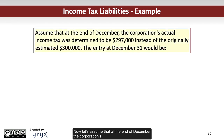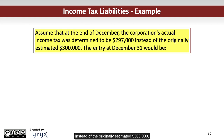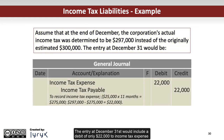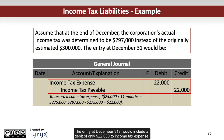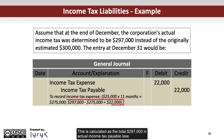Now let's assume that at the end of December, the corporation's actual income tax was determined to be $297,000, instead of the originally estimated $300,000. The entry at December 31 would include a debit of only $22,000 to income tax expense and a credit to income tax payable for the same amount. This is calculated as the total $297,000 in actual income tax payable less $275,000 remitted — 11 months at $25,000 per month.